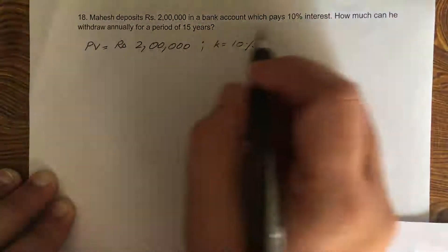Interest rate is 10%, and the period is 15 years. The question is how much can he withdraw annually? Now what do you mean by that, withdrawing annually? When you use the word annually, an equal amount to be withdrawn annually, what is that? That is nothing but an annuity. So that means we have to find out the annuity. We know the present value, we know the rate of interest, we know the period, we have to find out the annuity.